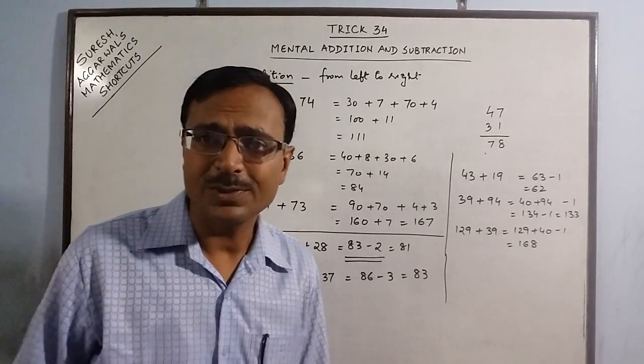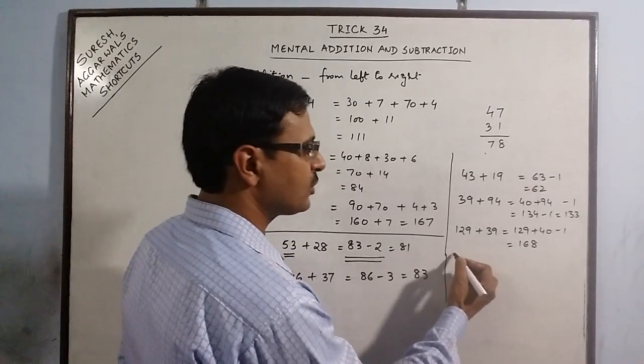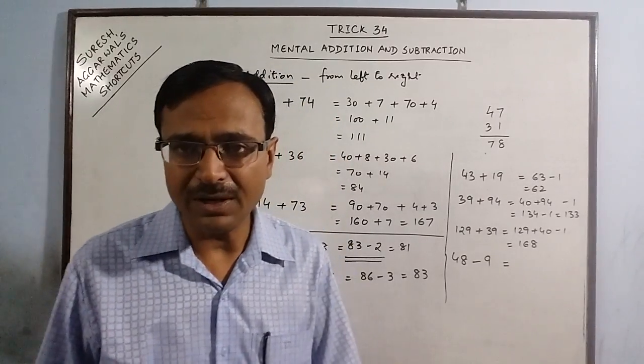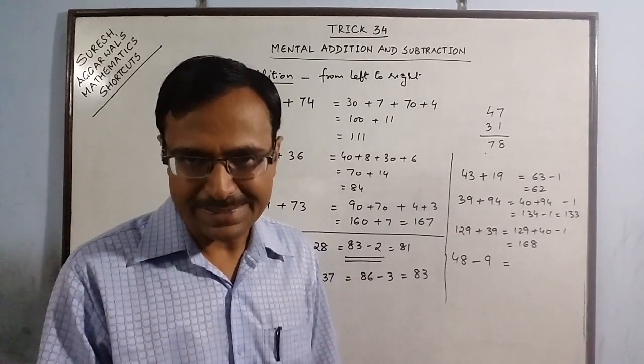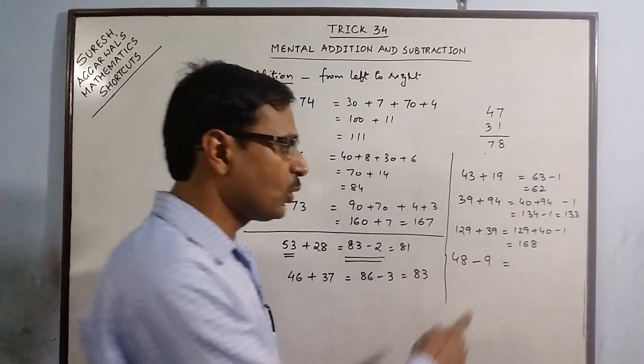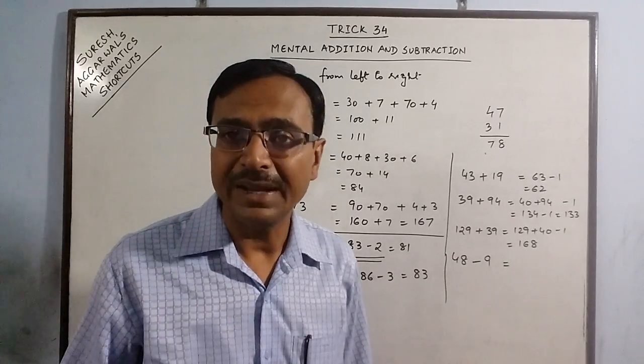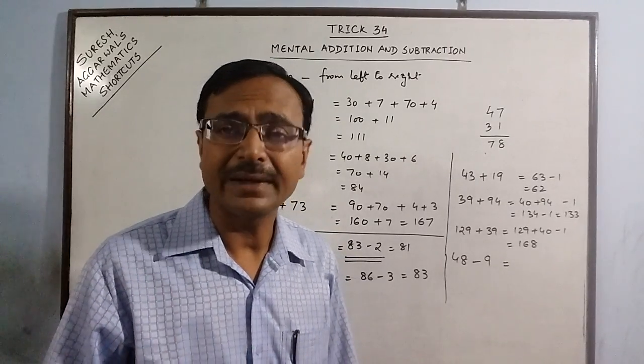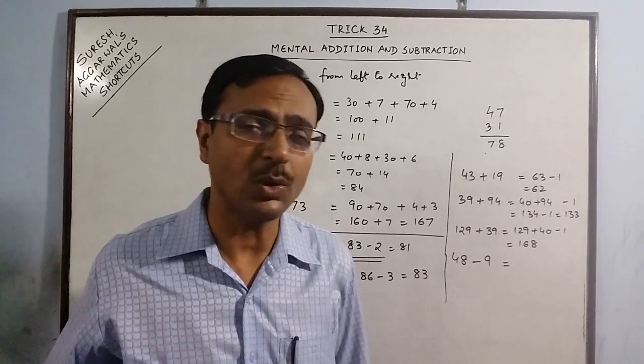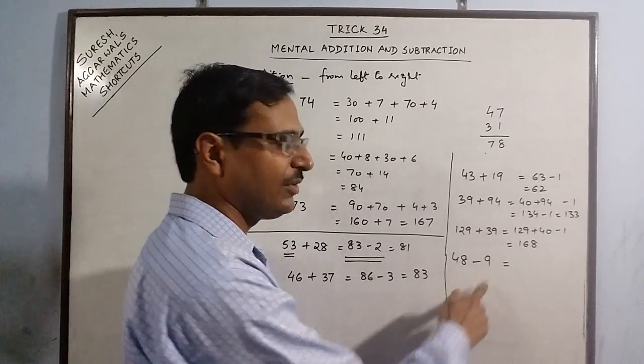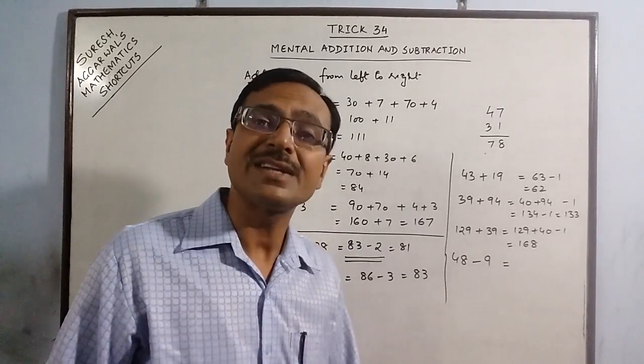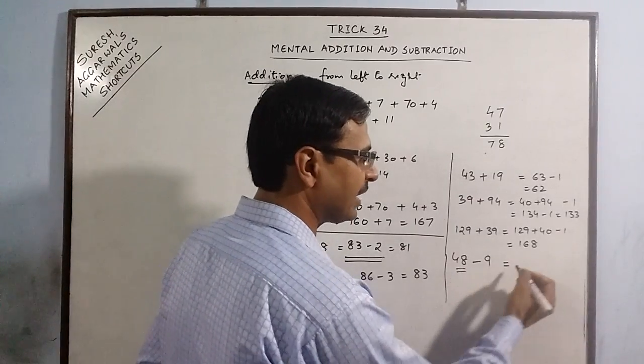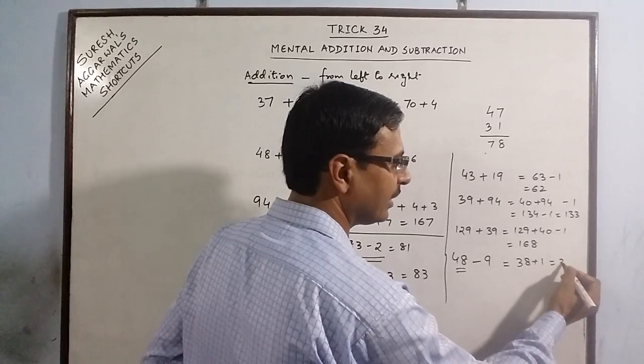Now we are dealing with subtraction also. Now see, suppose we have to subtract 9 from 48. Subtracting 9 is difficult, but subtracting 10 is very easy. So you don't subtract 9. Tell children that whenever you are subtracting 9, 19, 29, then you have to subtract 10, 20, 30 and so on and add 1. Because we are asked to subtract 9 and we are subtracting 10, so we have to increase the quantity by 1. So 48 becomes 38 and add 1 = 39.